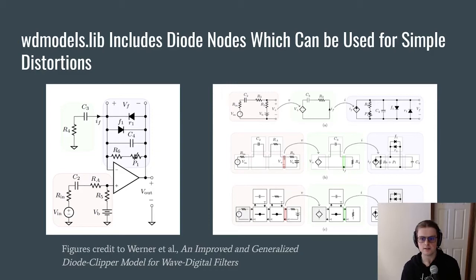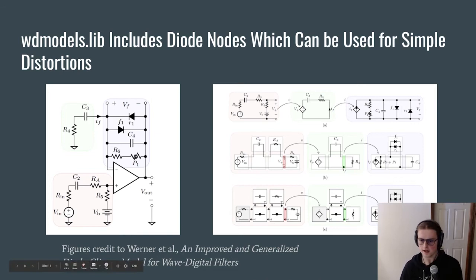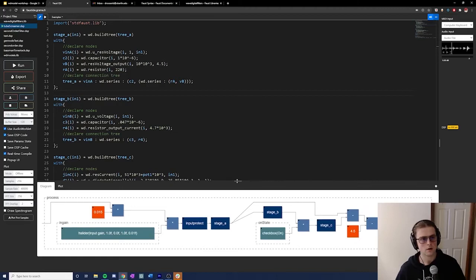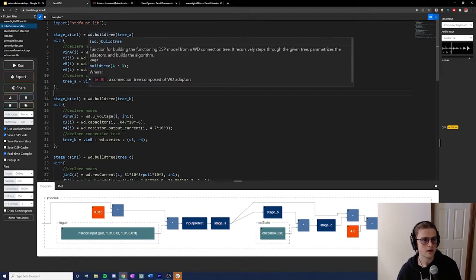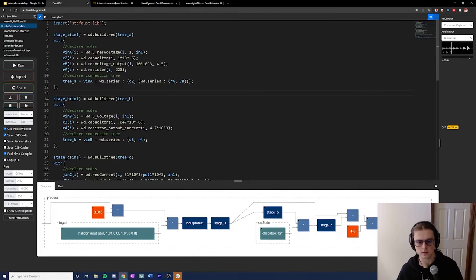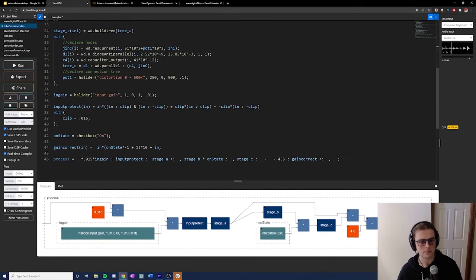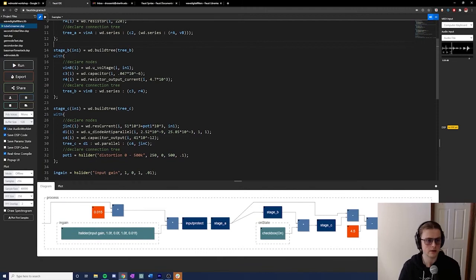This anti-parallel diode case is really cool because it occurs in the clipping stage of the Ibanez Tube Screamer — a very popular guitar distortion pedal which uses diode clipping to generate distortion. This wave digital model simulates just the distortion stage of the circuit. It's actually a three-stage process — not anything special about wave digital models, but a breakdown of the specific op-amp construction found in circuit theory, broken down into three distinct stages for this inverting op-amp style. We get three distinct wave digital models with three different connection trees, where the root is denoted by the grayed-out box.